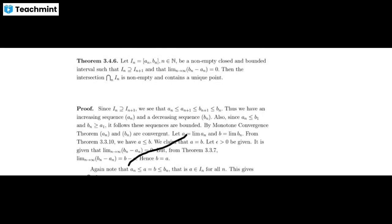In the Nested Interval Property, this is a property of real numbers. We will apply the Monotone Convergence Theorem to prove this Nested Interval Property, but if we assume the Nested Interval Property we can also prove the Monotone Convergence Theorem — they are equivalent.